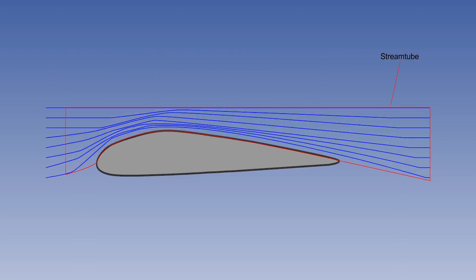A stream tube is an imaginary tube made up of streamlines. There is no flow into or out of the stream tube through the imaginary walls, only a flow along the tube. This concept will help you to visualize the airflow around an aerofoil.